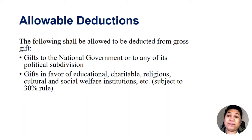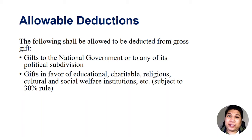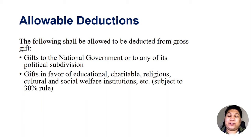Also, donations or gifts in favor of educational, charitable, religious, cultural, and social welfare institutions may also be deducted from the gross gift. These gifts are exempted by the tax code, but even so, they should still be added to the gross gift and later claimed as a deduction. The reason is we want to declare the correct amount of donations. These donations to non-government organizations are subject to the 30% rule — that is, not more than 30% of such donation may be used for administrative purposes.